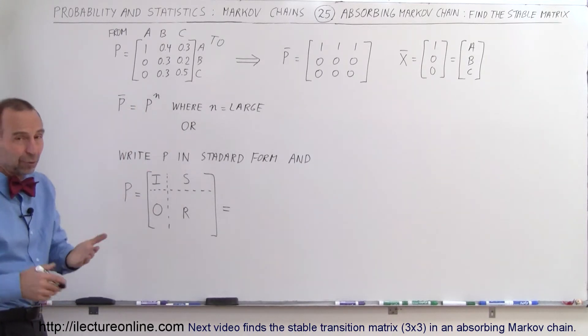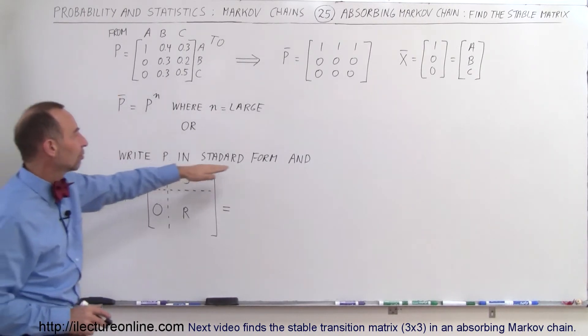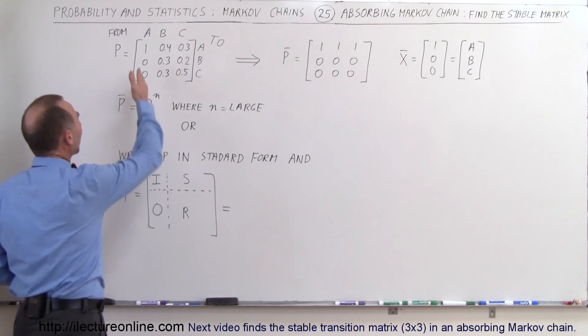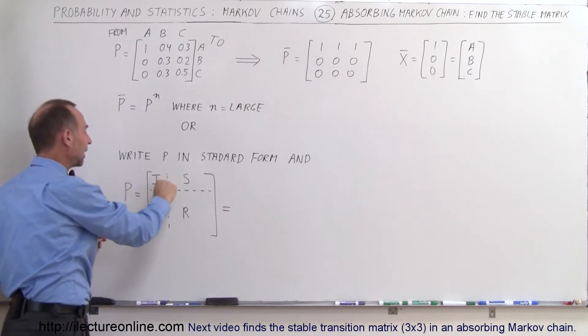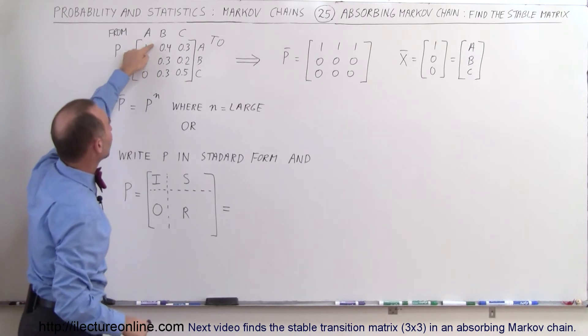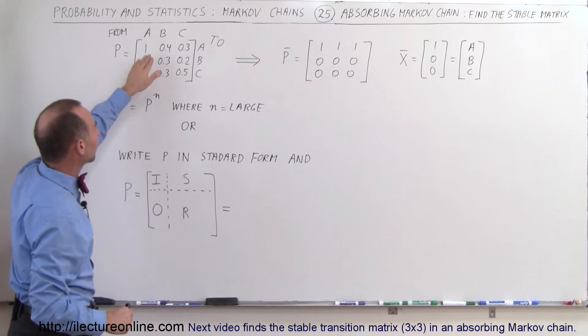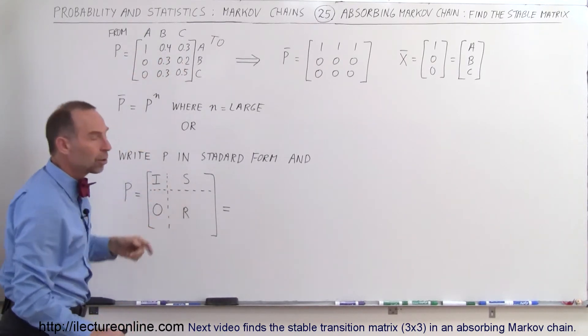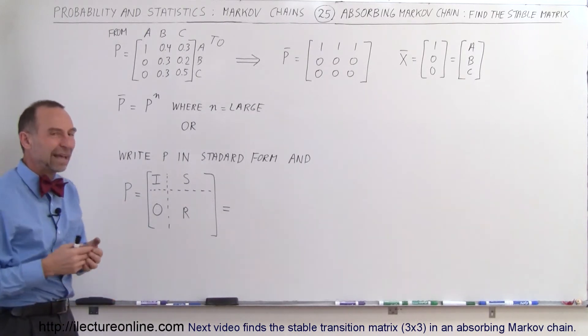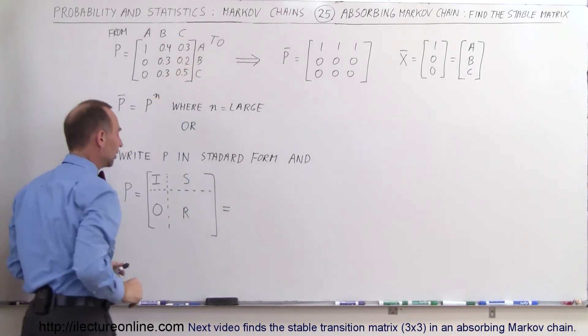Now we can calculate the stable matrix by simply taking the matrix and multiplying by itself n number of times with n being a very large number, and of course that's a lot of work. Or we can write the transition matrix in standard form where we have the one and the zeros in the first column with the one on top right there. When we do that we can see that in the upper left corner we'll have what we call the identity matrix. Then on top here we have what we call the S matrix, down here we have what we call the zero matrix, and here we have what we call the R matrix. Now the S and R don't have any specific meaning at this point; they're just indicating the regions here on the matrix.